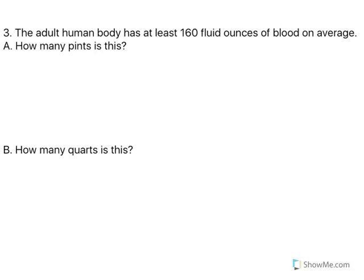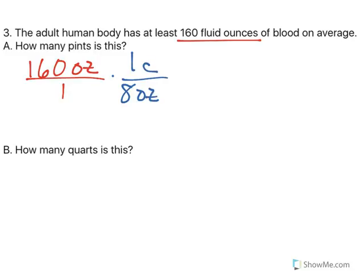Number three. The adult human body has at least 160 fluid ounces of blood on average. How many pints is this? Well, we're given 160 ounces. And if you look at your conversion chart, ounces do not go to pints.